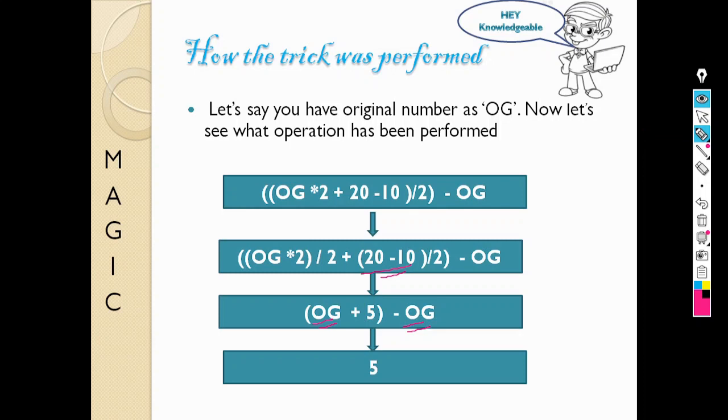You can also alter the trick by changing the operations in the middle. Like instead of 20 minus 10, you can put 38 minus 18 divided by 2 that will give you 10 at the last. Or maybe you can do certain multiplication and addition and then try to guess the answer. That's how you can change your magic.